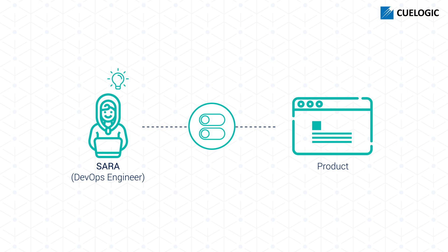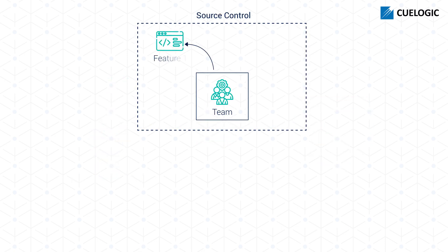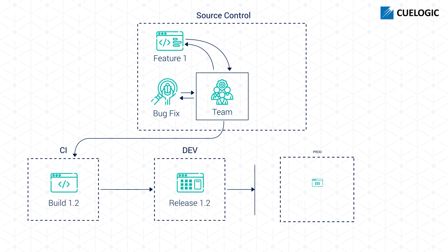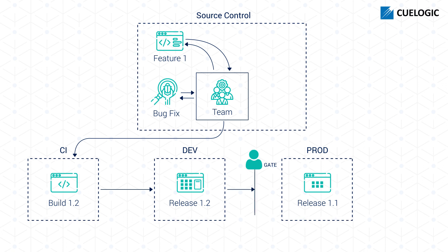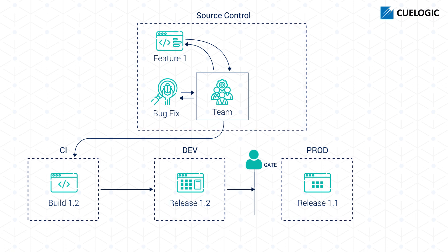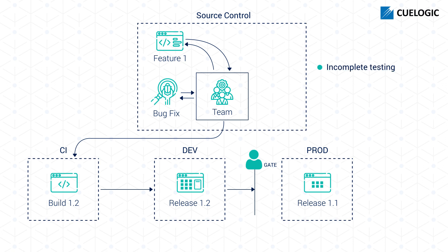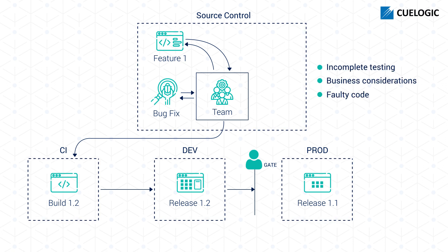First, Sarah reviewed her pipeline and realized that there were some process-related issues she had overlooked. Her team had built feature one, which had gone through the pipeline but had to stop before being deployed to production. This was because of the gate, which represented the host of issues that could prevent the feature from being deployed. These issues included incomplete testing, business considerations, faulty code, and more.